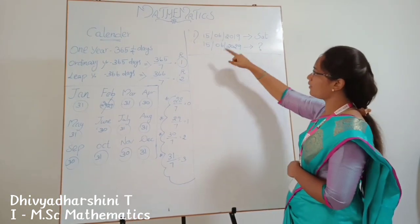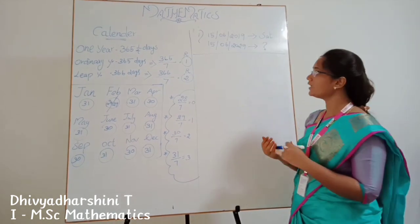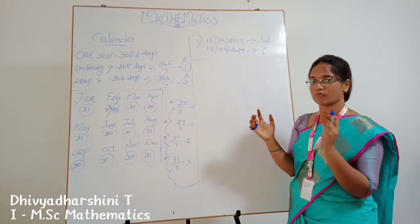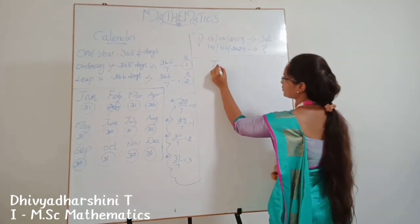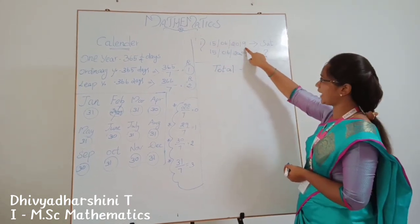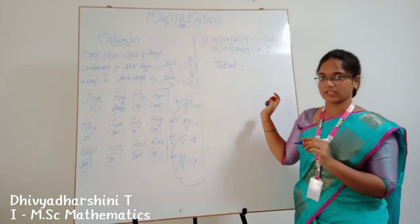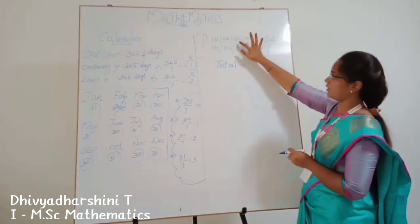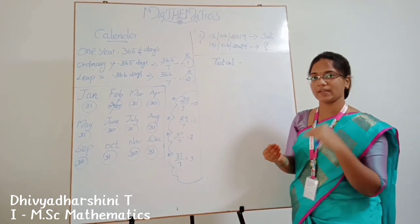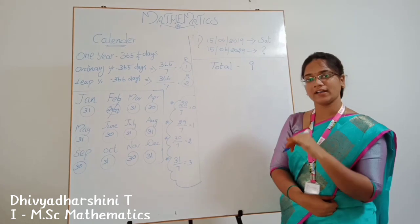The next problem: we have to find the day for the date 15–06–2029. First, we find how many years have passed. The difference between 19 and 29 is 10 years, but the remaining years — 10 minus 1 — is 9. So we work with 9 years total.